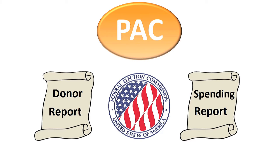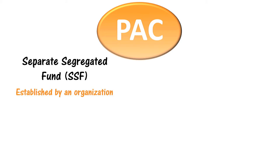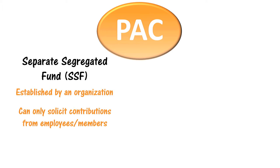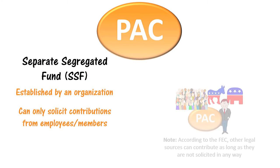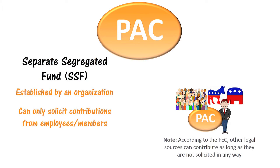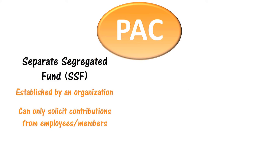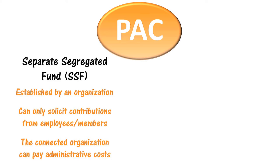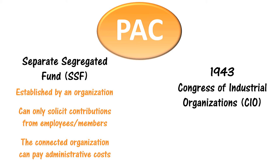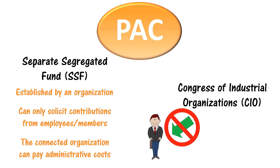The FEC designates two types of PACs. A separate segregated fund is established by an organization, and this type of PAC can only solicit contributions from the organization's employees or members. Others can also contribute as long as they aren't solicited. The organization connected to the PAC cannot contribute its own money, but it can provide financial support for administrative and fundraising costs. This was the first type of PAC, created in 1943 by a labor union called the Congress of Industrial Organizations. Because federal law prevented the CIO from contributing to candidates, it created a PAC so it could still have influence in elections.